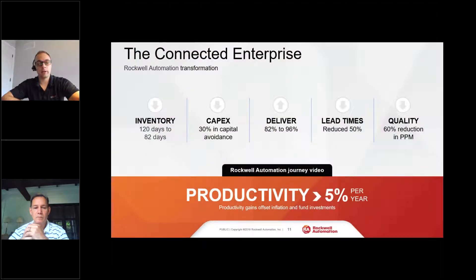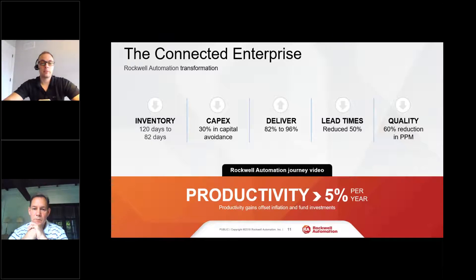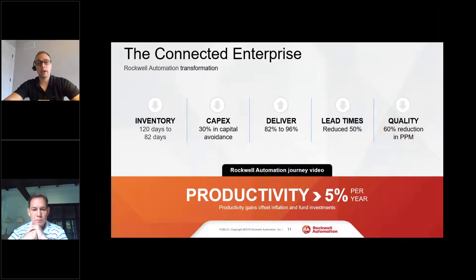This slide is what I like to call our bottom line up front. When we talk about this connectivity and use of data, what it means to us is we're able to realize a 5% productivity improvement year over year. By reducing our inventory on hand and having better visibility, we have to keep less on the shelf and free up working capital. CapEx avoidance: the old way was if we needed to increase capacity, we'd buy a new machine. Now we're able to get a better picture of our manufacturing environment, make better use of the equipment we have, and spend less on CapEx.